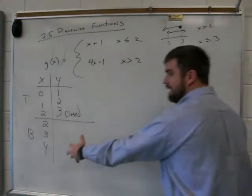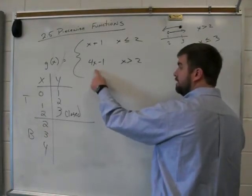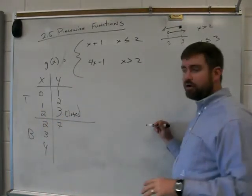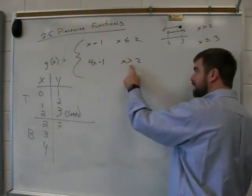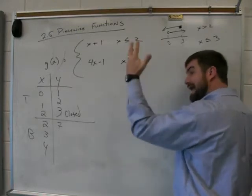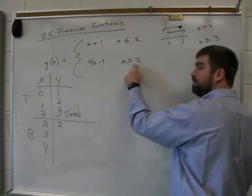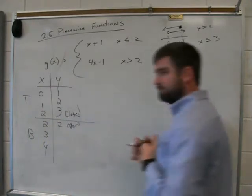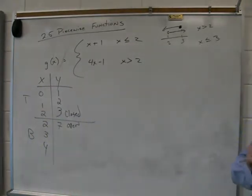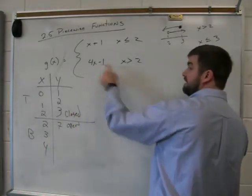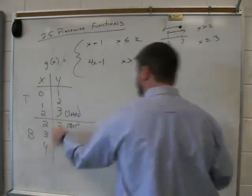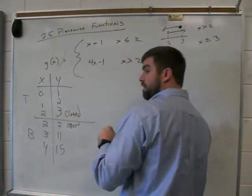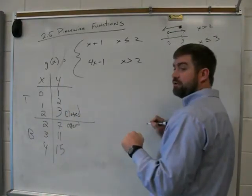On the flip side, we go to the bottom. We stick in 2 right here, and what do we get? 7. We get 4 times 2 is 8 minus 1 is 7. But when I stick 2 right there, 2 is not greater than 2. That's a false statement. And we don't have the bar there. If the bar is not there, then what does that tell us? It's open. It's an open circle. So write open right there. We stick in 3, and what do we get? 11. We stick in 4 there, and what do we get? 15.